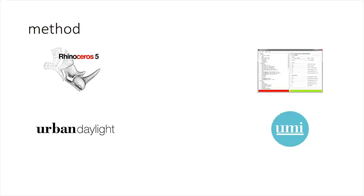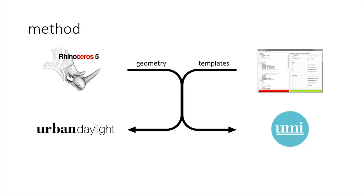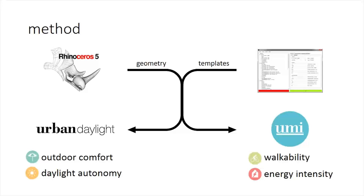Our method integrates Rhinoceros, a CAD tool, with three programs developed here at the MIT Sustainable Design Lab: the template editor, the urban daylighting tool, and UMI, the urban modeling interface. We model the neighborhood geometry in Rhino and use the template editor to input building construction information, occupancy schedules, and other data gained on our site visit. The urban daylighting tool performs outdoor comfort and daylight autonomy simulation. UMI performs walkability analysis and energy simulation.